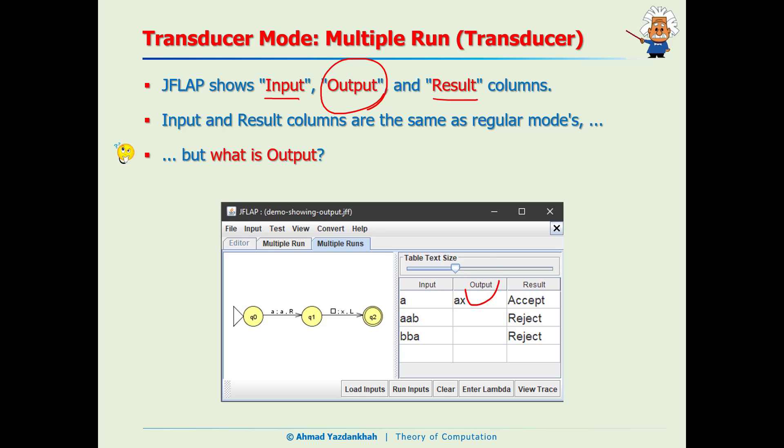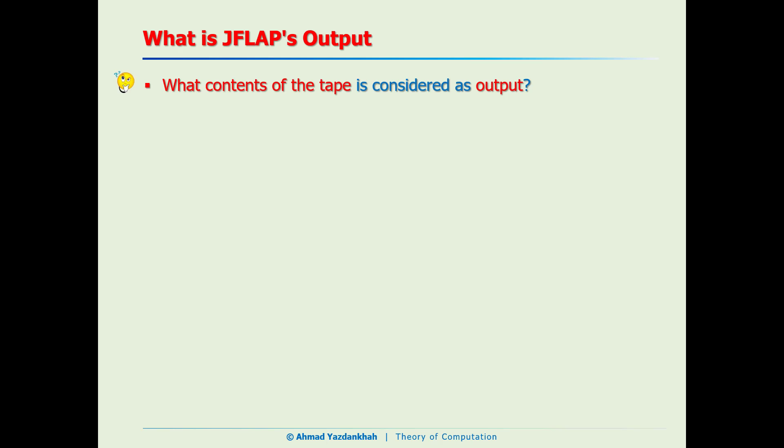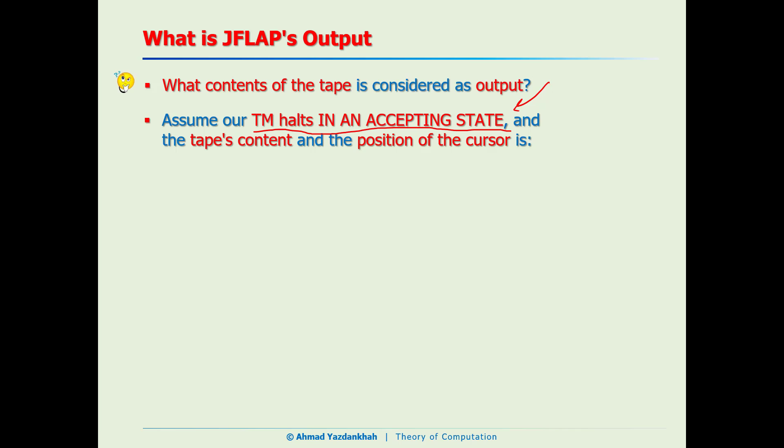So you see this output here, but really what is this output? This is something that I will be explaining in the next section. In this section we want to focus on what the JFLAP's output is. We know that the output is located on the Turing machines tape, but what part exactly of the tape should be considered as the output?